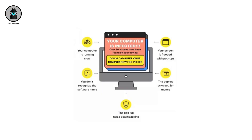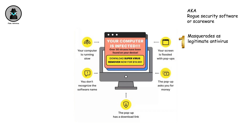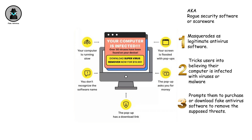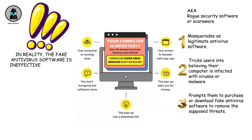Fake antivirus. Fake antivirus, also known as rogue security software or scareware, is a type of malware that masquerades as legitimate antivirus software. It typically tricks users into believing their computer is infected with viruses or malware and prompts them to purchase or download fake antivirus software to remove the supposed threats. In reality, the fake antivirus software is ineffective, or may even install additional malware onto the victim's system.